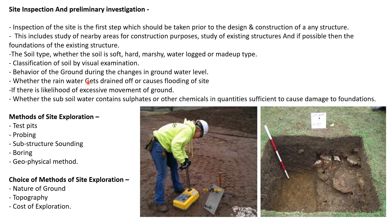Site inspection and preliminary investigation: inspection on site is the first step prior to the design and construction of any structure. This includes study of nearby areas, study of existing structures and if possible their foundations, the soil type — whether soil is soft, hard, marshy, waterlogged, or made-up type — classification of soil by visual examination, behavior of the ground during changes in groundwater level, whether rain drains off or causes flooding, if there is likelihood of excessive ground movement, and whether subsoil water contains sulphates or other chemicals sufficient to cause damage. Methods include test pits, probing, substructure sounding, boring, and geophysical methods.